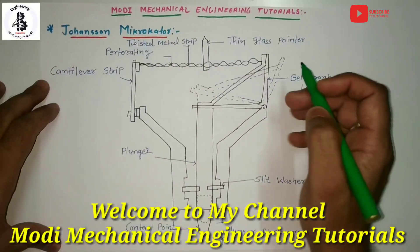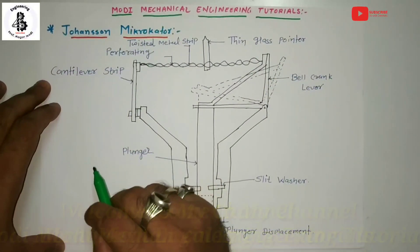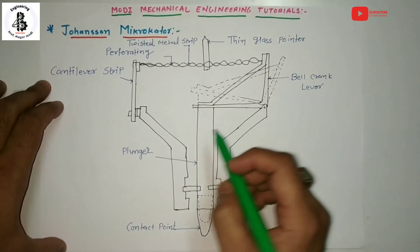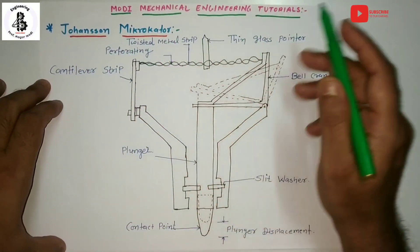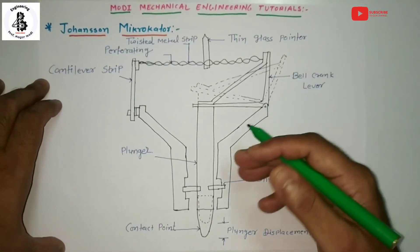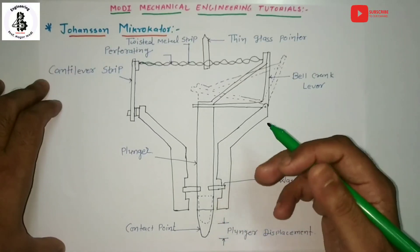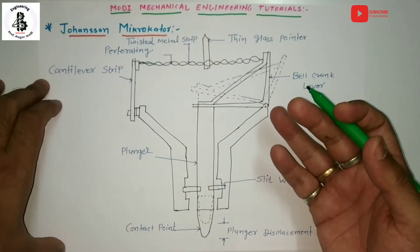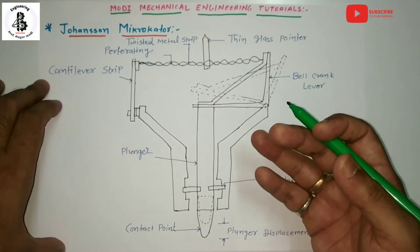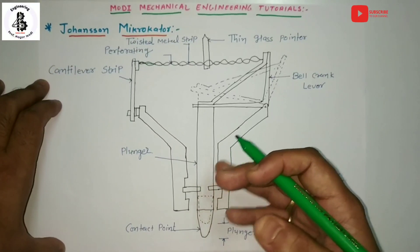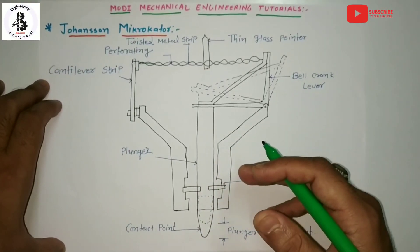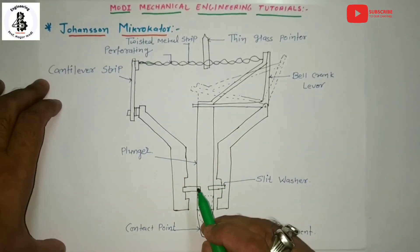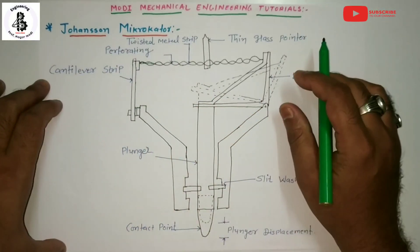Welcome to Modi Mechanical Engineering Tutorials. Today I would like to explain about one of the mechanical comparators, and that will be Johnson's Micro Comparator. Before starting this theory, the basic concept and characteristics of the comparator will be explained - those were covered in my previous lectures and that link will be given in my description. Now let us start with the basic construction and working of Johnson's Micro Comparator.